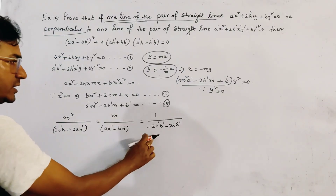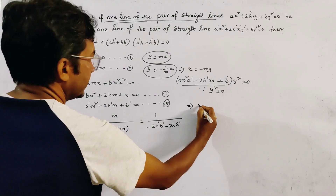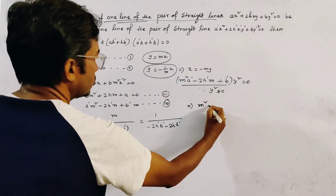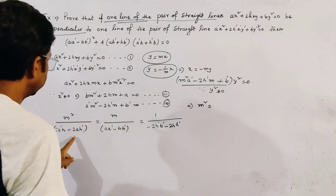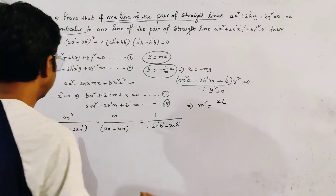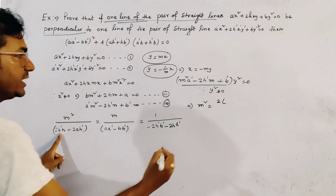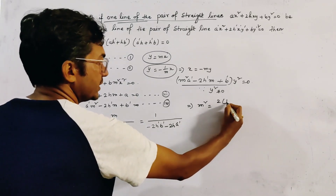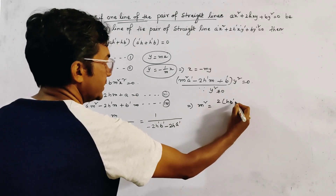From the first and third parts of the cross multiplication, we get m² = 2(hb' - ... ) expressions relating m² and m.